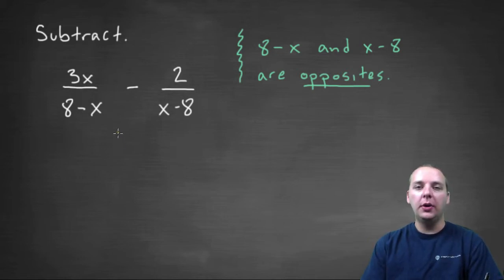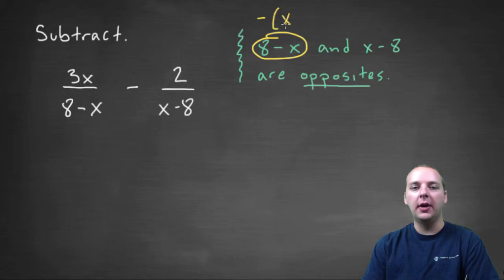So what we can do is we can actually write one of these as negative of the other. So like 8-x would be the same as negative quantity x-8.